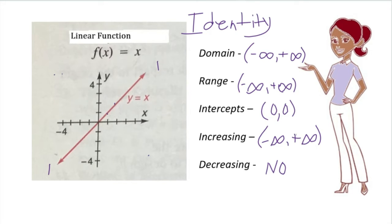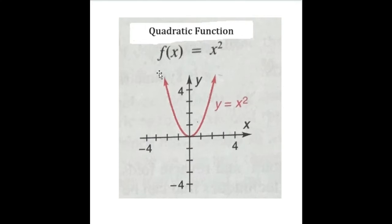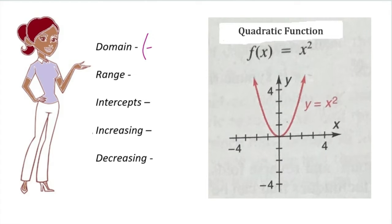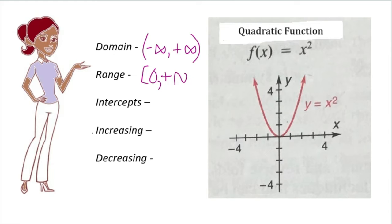Now looking at the parent function for quadratic functions. The domain goes along the x-axis and can be any real number, so negative infinity to positive infinity. For the range, we start at the bottom of the y-axis and go to the top — there are no values in the negative y-axis, so the range is from zero to positive infinity. That's because when we square a number, we get a positive number.